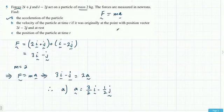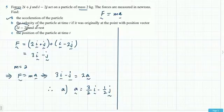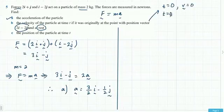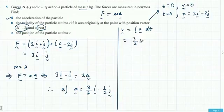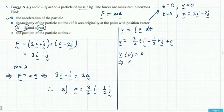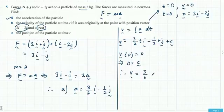Part B looks for velocity. The particle was initially at rest, so when t equals 0, velocity equals 0. When t equals 0, position is 2i minus 2J. Velocity is the integral of acceleration with respect to time, giving 3 over 2 ti minus a half tj plus a constant. Using the condition v equals 0 at t equals 0, the constant is zero, so velocity is 3 over 2 ti minus a half tj.